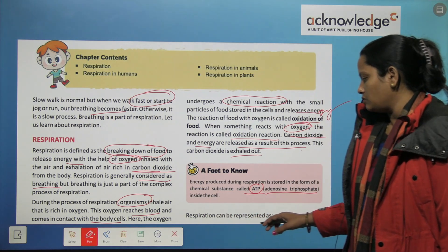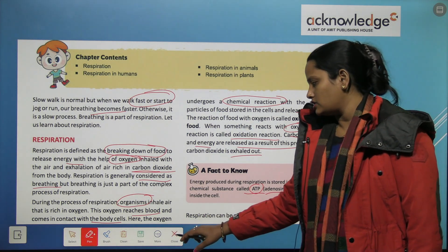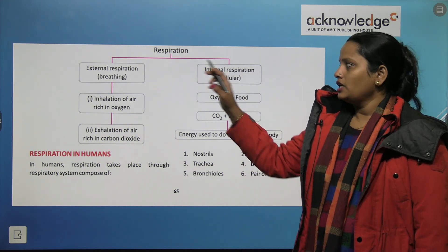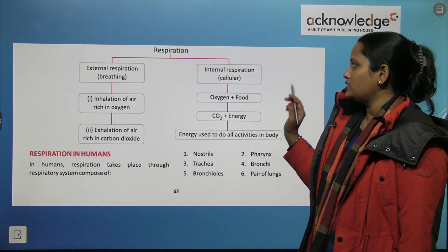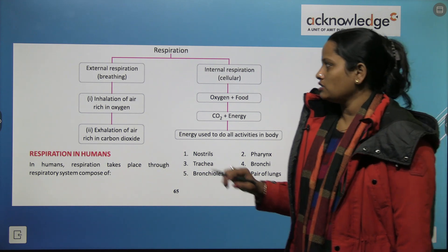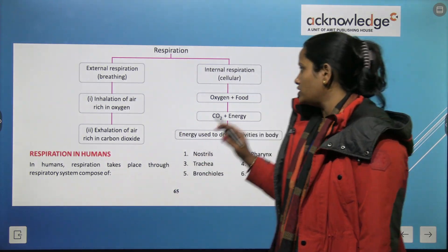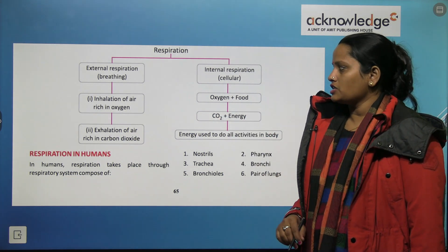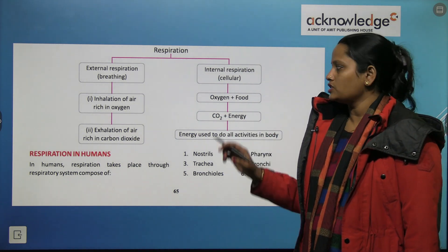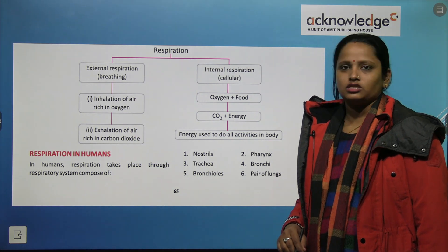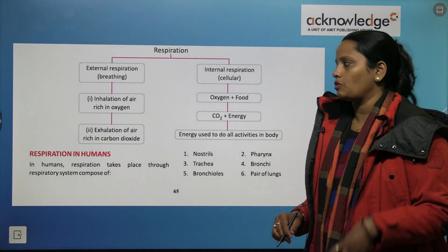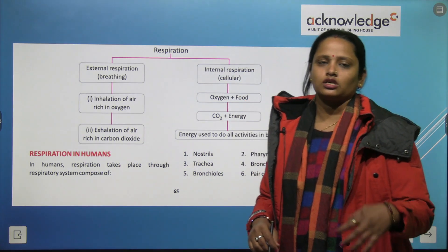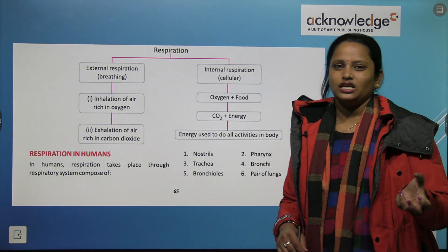Respiration is divided into two categories: external respiration and internal respiration. External respiration involves breathing — inhaling air rich in oxygen and exhaling air rich in carbon dioxide. Internal respiration is cellular respiration, which takes place inside the body cells.